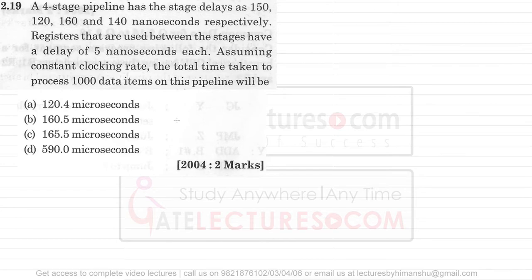A four-stage pipeline has stage delays of 150, 120, 160, and 140 nanoseconds respectively. The registers used between the stages have a delay of 5 nanoseconds each. Assuming a constant clocking rate, the time taken to process 1000 data items on this pipeline — which of the given options is correct?